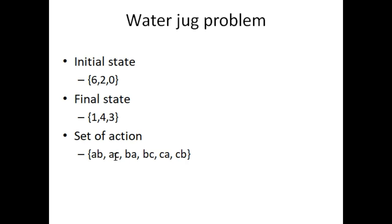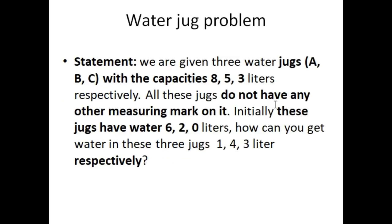So if we are going to move water from jug A to C, then we will represent our action as AC. And if we are going to move water from jug B to A, then this action will be BA. So at the end, this CB means if we are going to move our water from jug C to jug B, then we will represent this as CB. So here is some crucial information I have written in this slide.